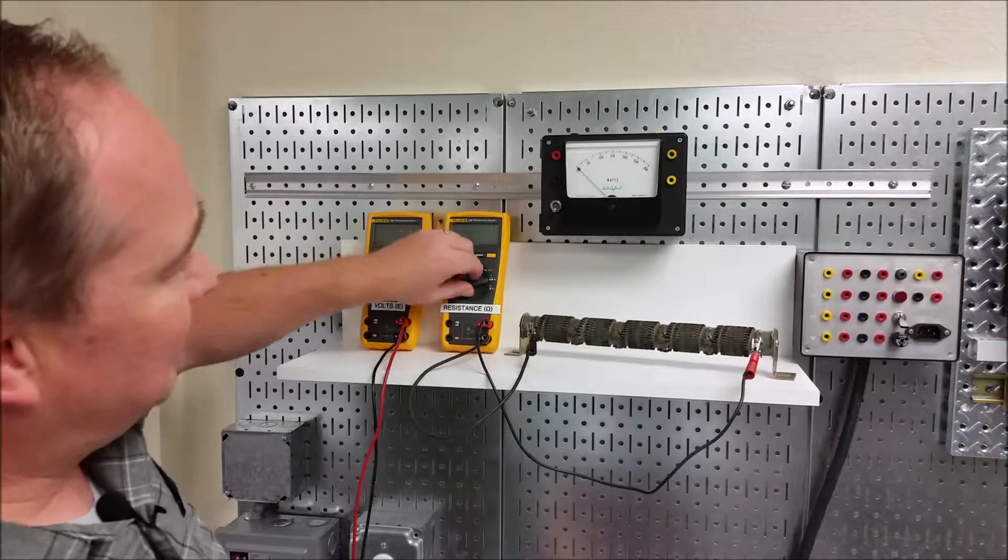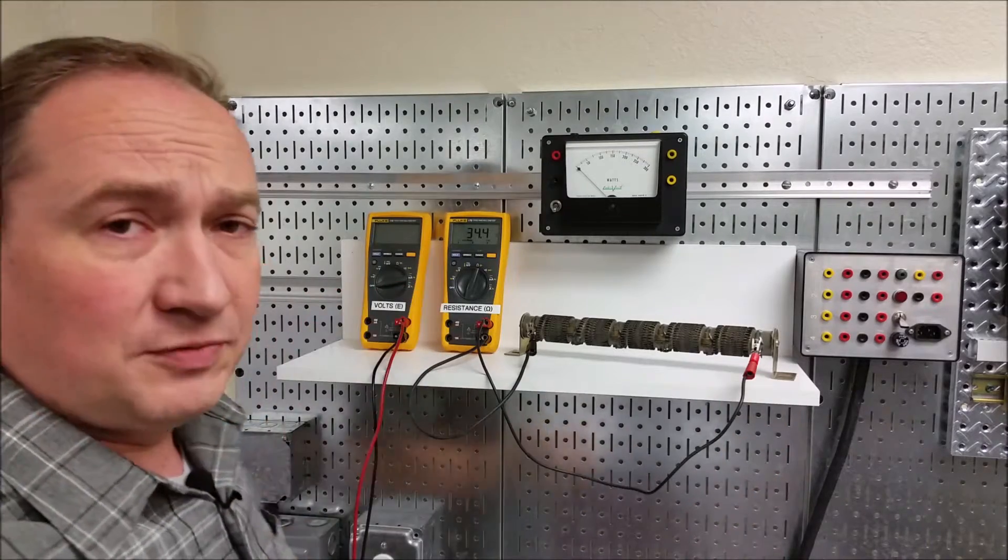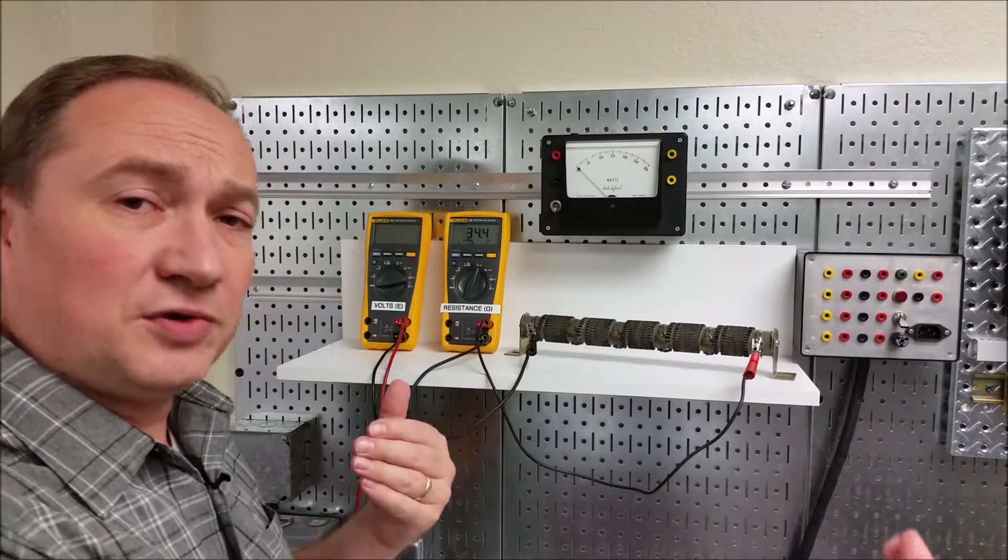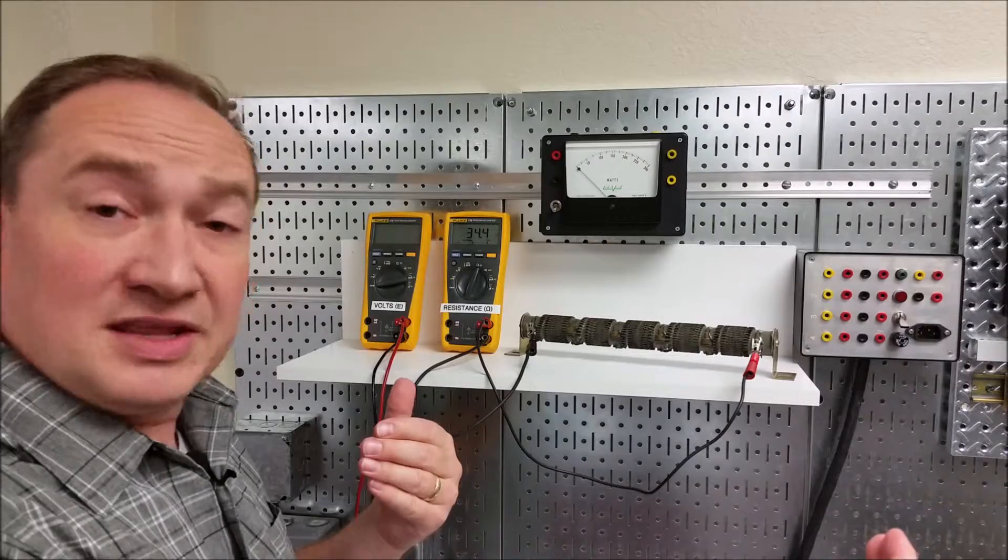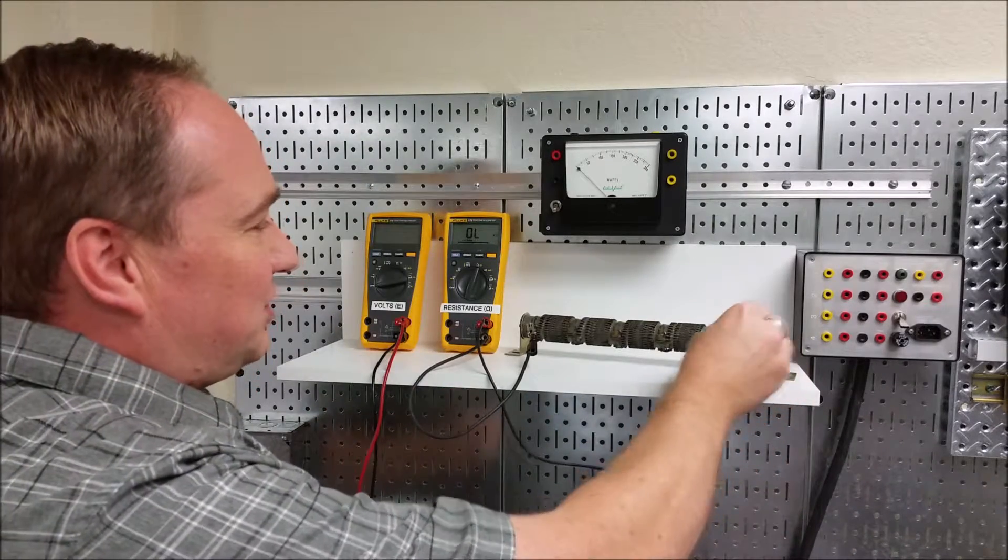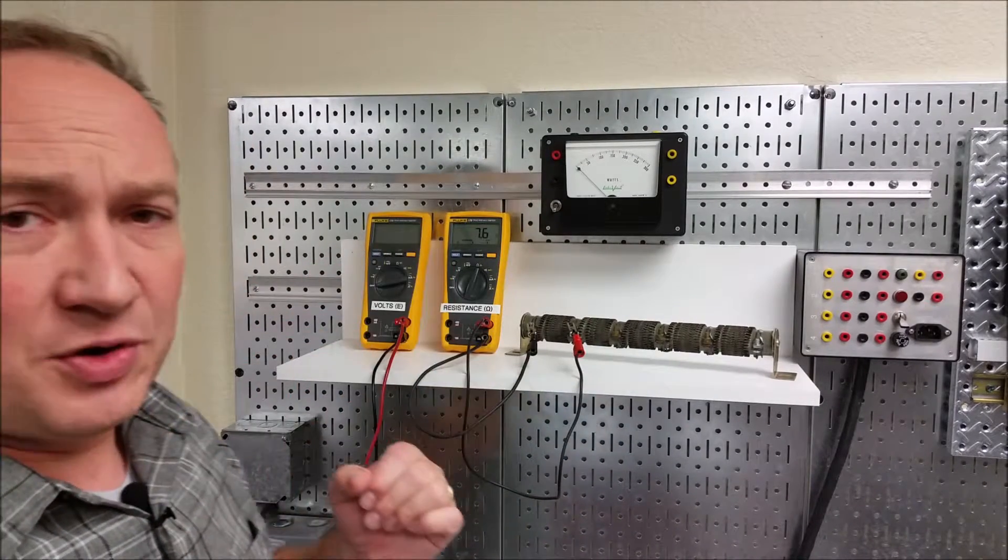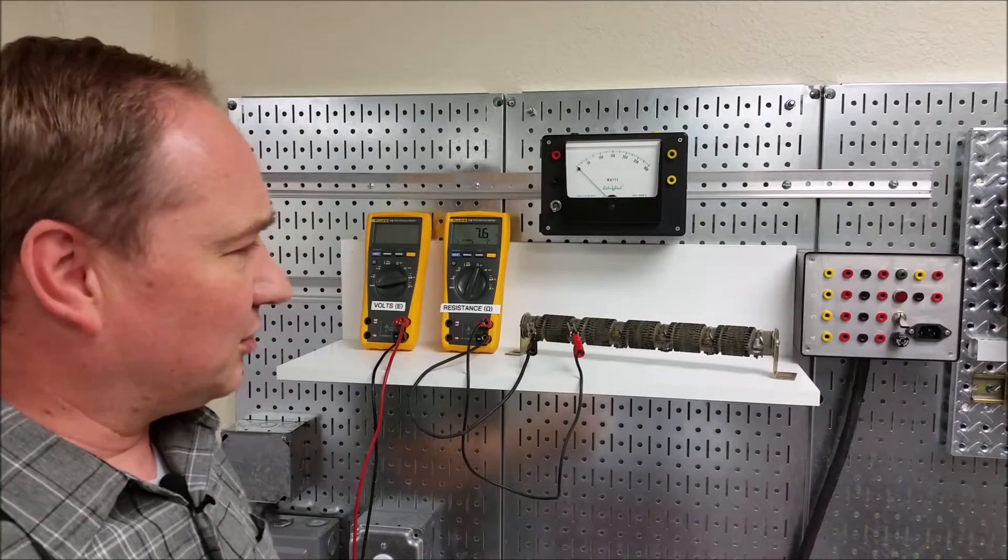So I have my ohmmeter set up here. I'm going to turn it on for a second, and we can see that we've got about 34.4 ohms across the full range of the resistor, and that's well within tolerance. Individually, let's check one segment, and it tells us that we've got 7.6 ohms, so that's also well within tolerance.